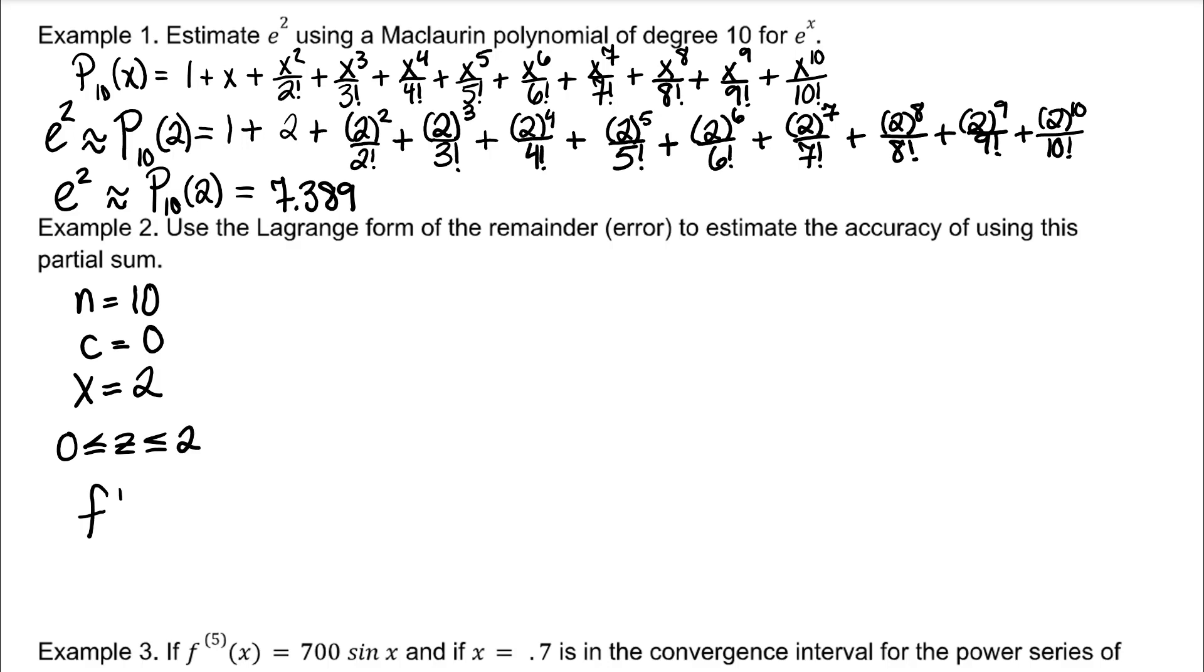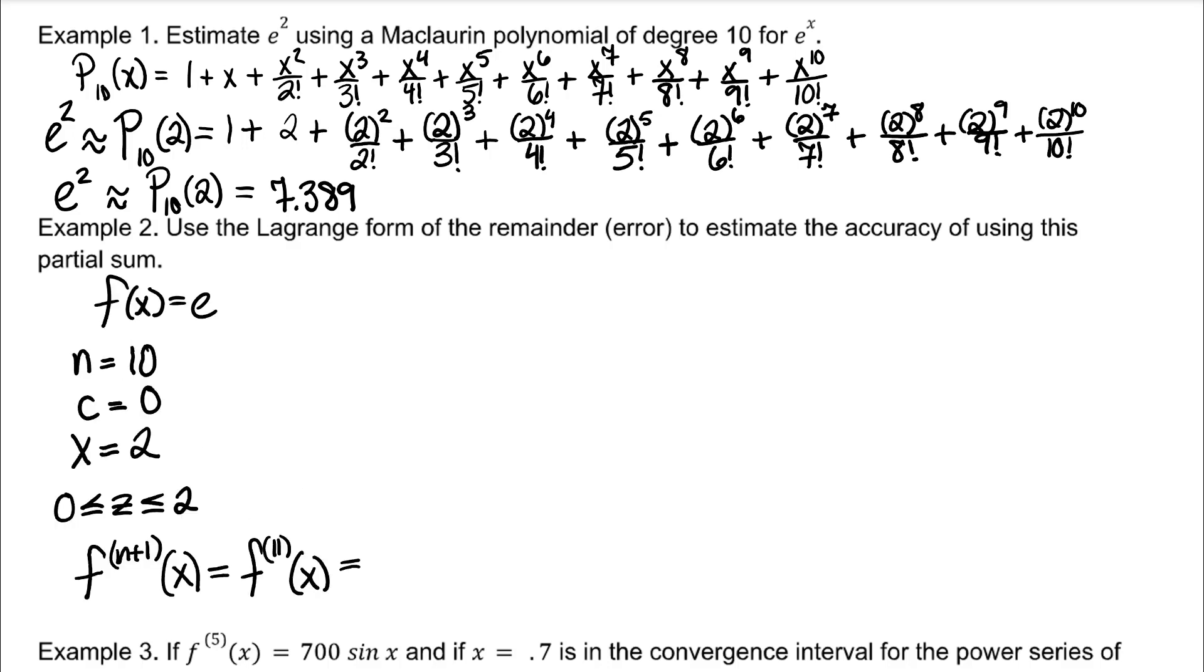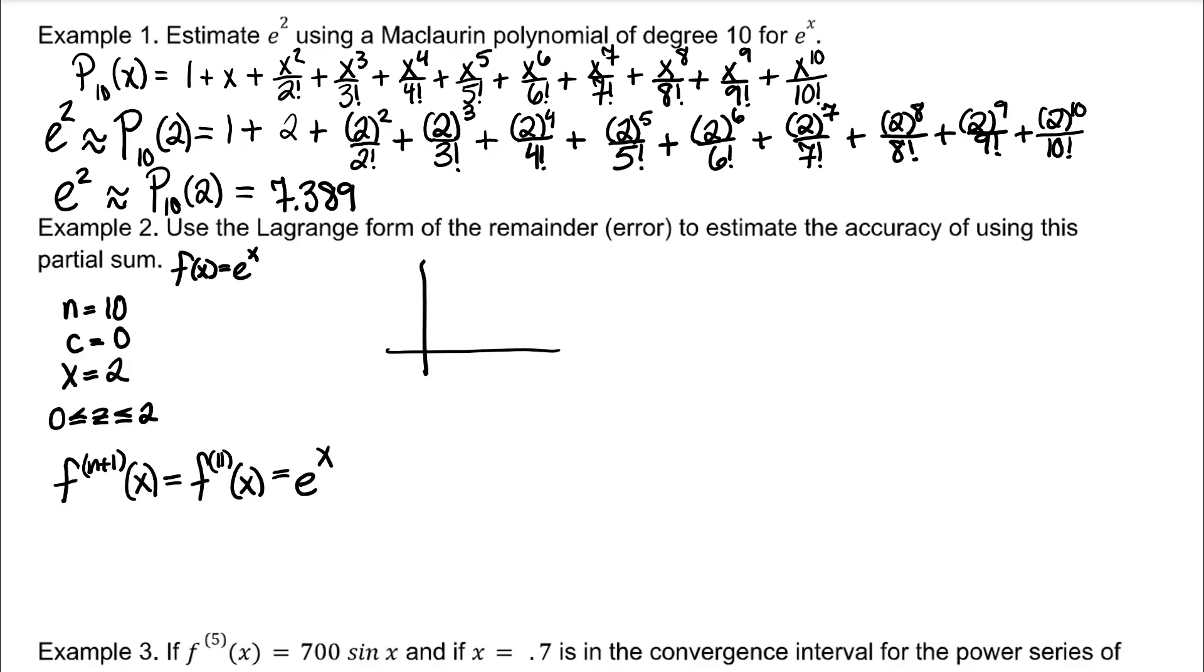Remember that z needs to be between the center and the value we're approximating. To choose our value of z, we need to find the f to the n plus first derivative. That would be the 11th derivative of x. Since our function is e to the x, it makes it a lot easier to find the 11th derivative because we know the derivative of e to the x is e to the x. Since e to the x is an increasing function, then we choose the right endpoint, which is x. So z would equal x.